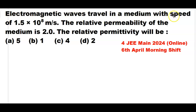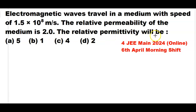Electromagnetic waves travel in a medium with a speed of 1.5×10⁸ meter per second. The relative permeability of the medium is 2. We need to calculate the relative permittivity of the medium.